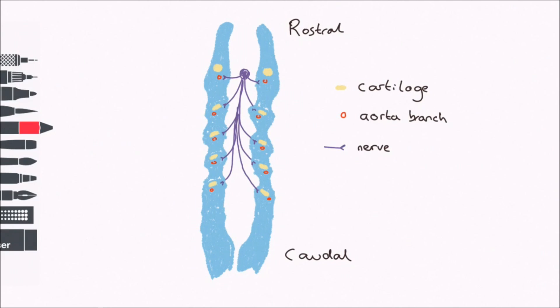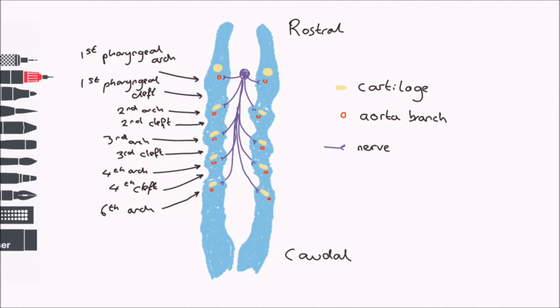Although there are five pharyngeal arches, they are numbered 1, 2, 3, 4 and 6, with the fifth arch underdeveloped.